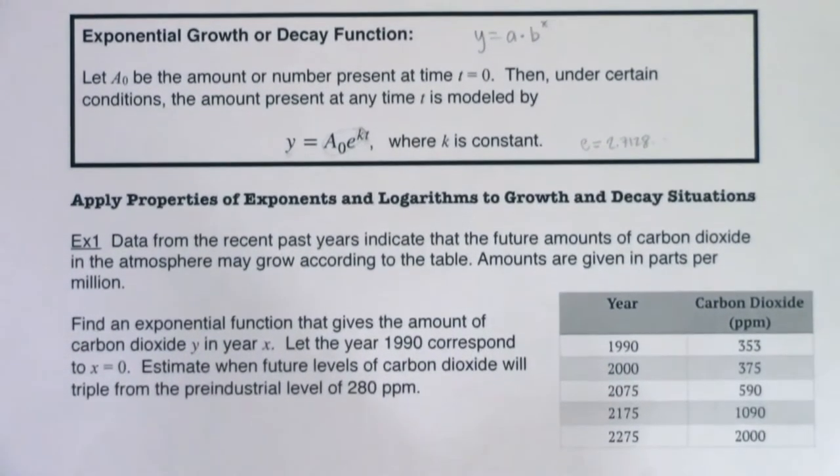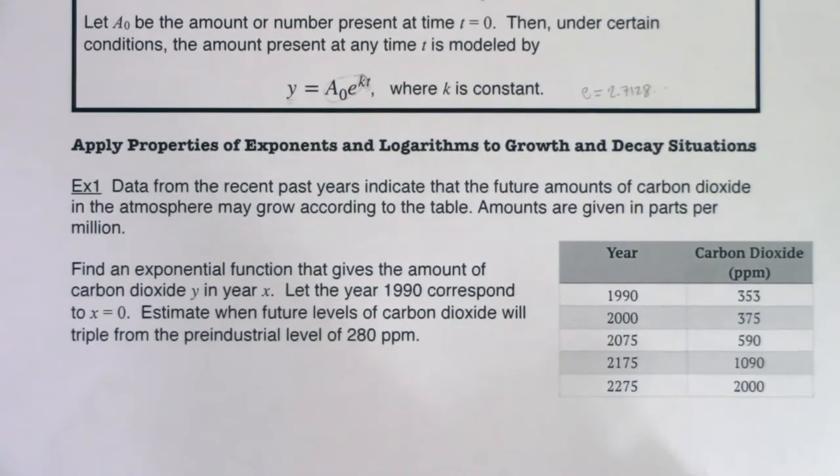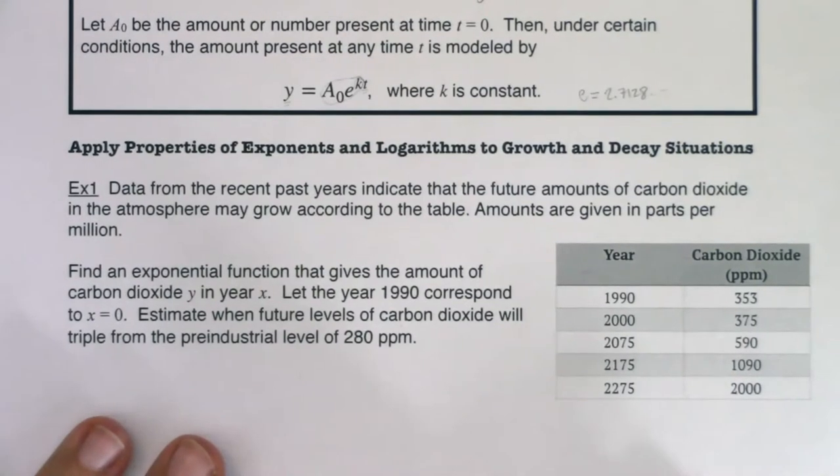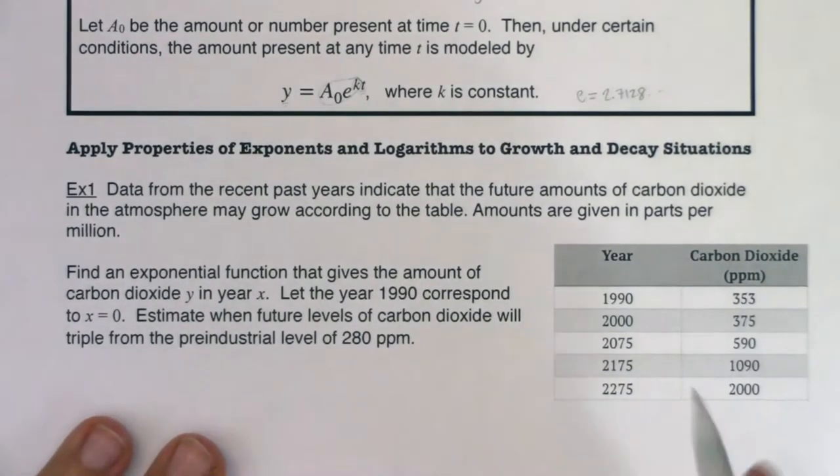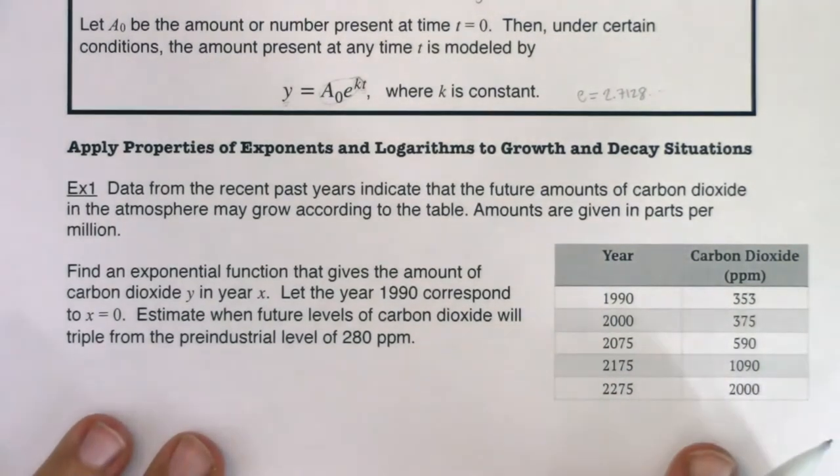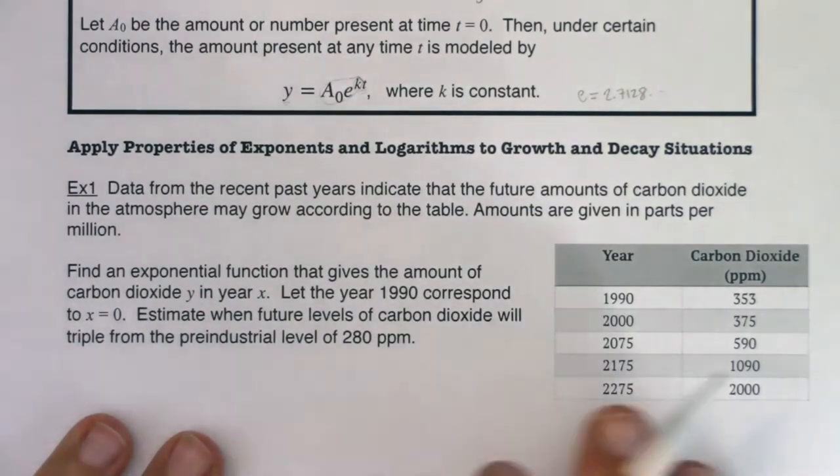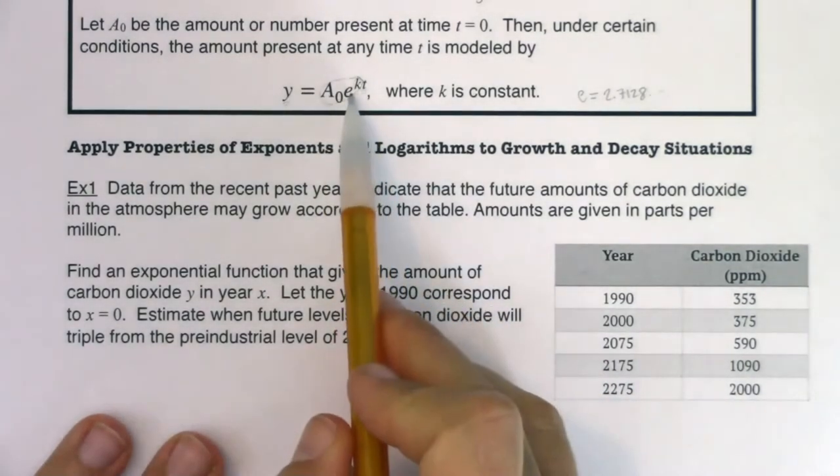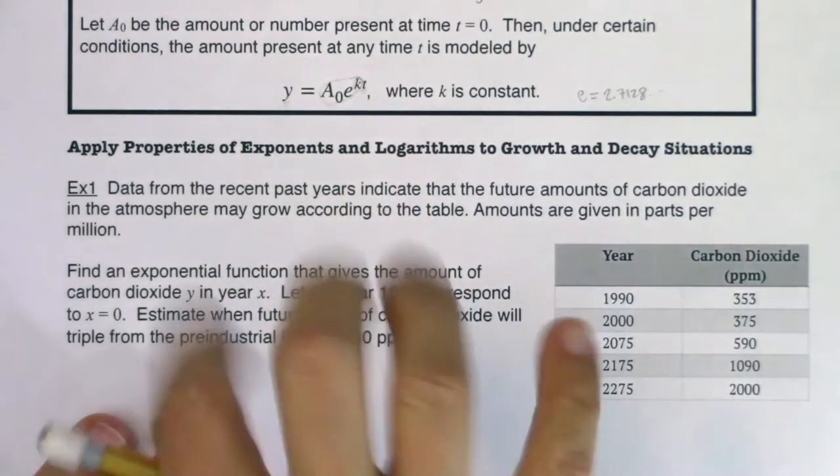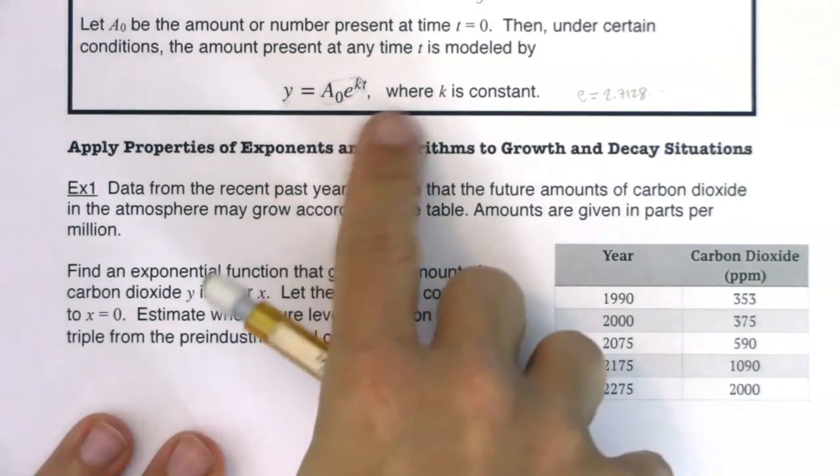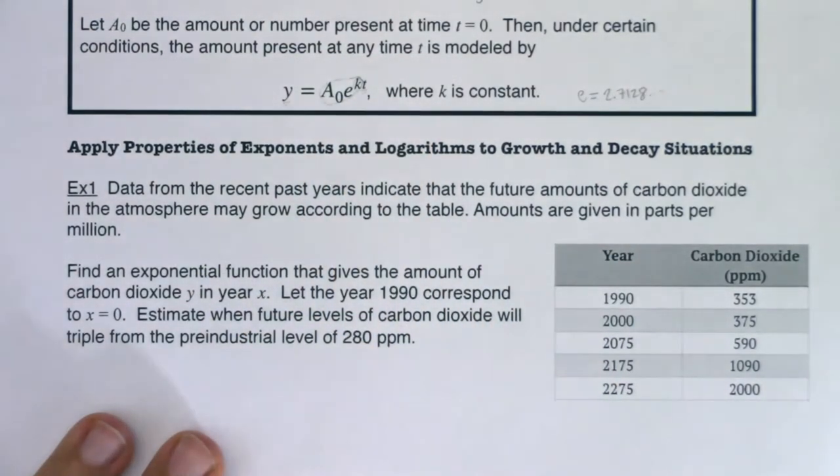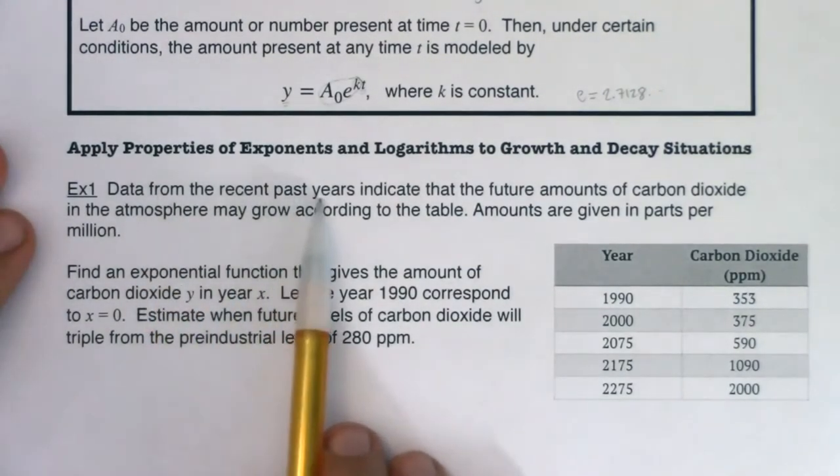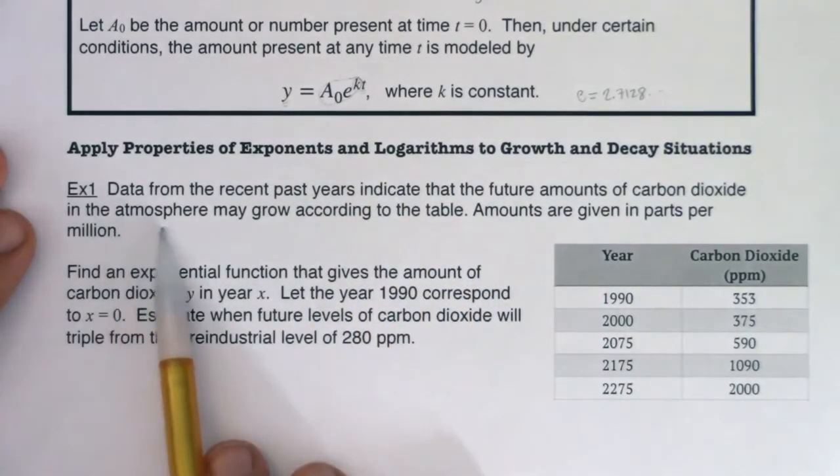With all that being said, let's go through example one. Let me scooch my paper up so we can get example one in view. I want to mention that I will redo this problem when we get to the next section using exponential regression on our calculator. When we use exponential regression, the problem's going to go a lot faster. But if we do this on our calculator, I will not have base e.